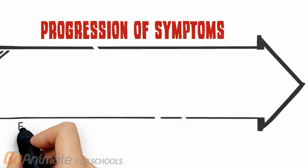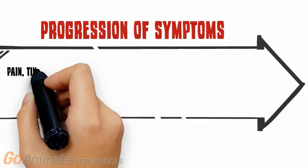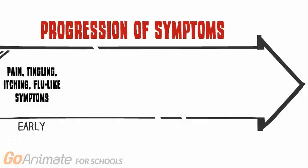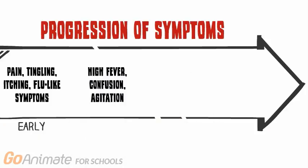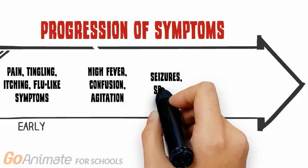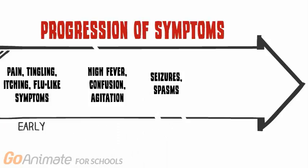Gradually, the affected individual becomes extremely ill, developing symptoms including high fever, confusion, agitation, and eventually seizures and coma. Typically, people with rabies also develop irregular contractions and spasms of the breathing muscles in response to various stimuli, and eventually the various organs of the body are affected.